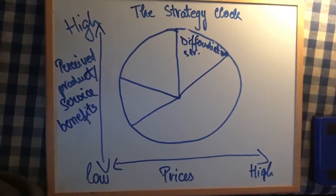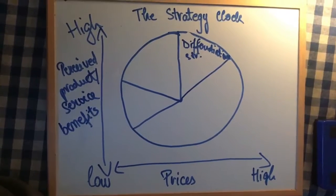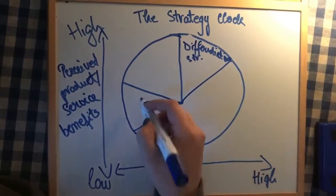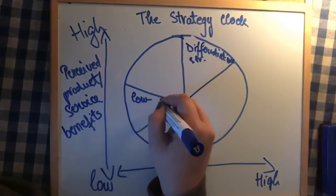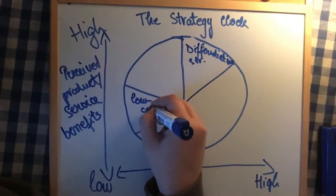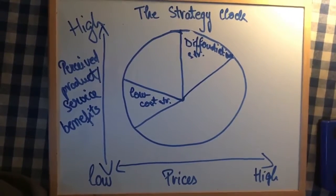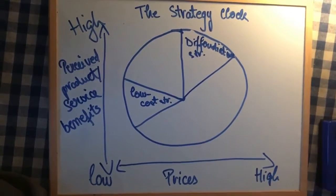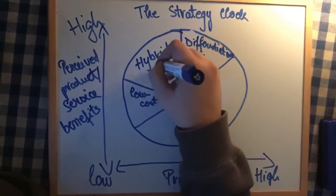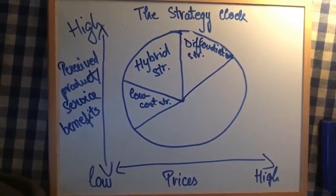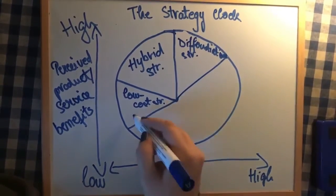The second strategy on the clock is the low prices strategy, at close to the 9 o'clock position. This strategy has a standard of low price and gains market share by combining low prices with reasonable value. The third is the hybrid strategy, from 9 o'clock to 12 o'clock, allowing a low price and differentiation — a combination of the cost leadership strategy and differentiation strategy.